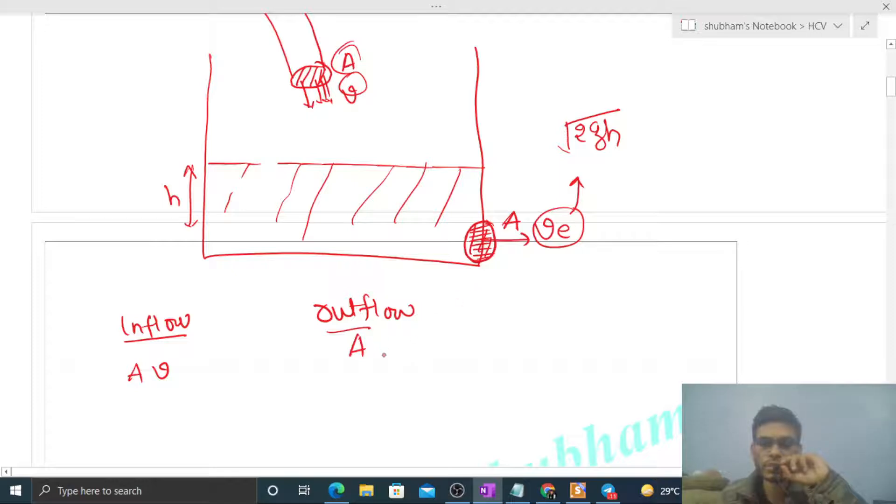Then outflow will be the area of cross-section of the hole into velocity of efflux, that is A times square root of 2gh. Now inflow is constant, right? The area of cross-section of this pipe or tube is constant, and the velocity of water from this tube is also constant. So inflow is constant. But if we talk about outflow...